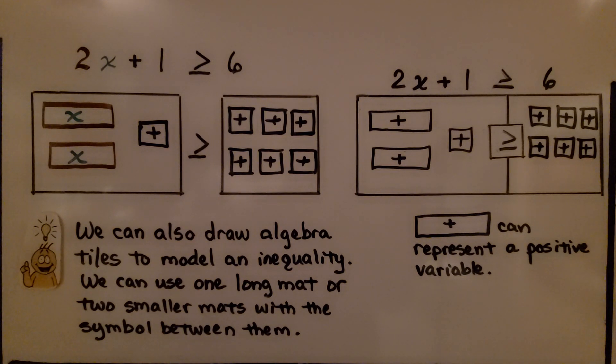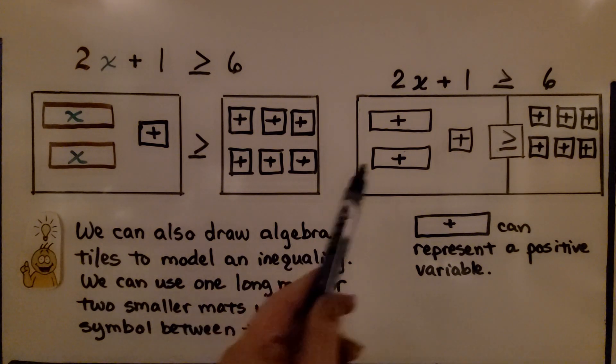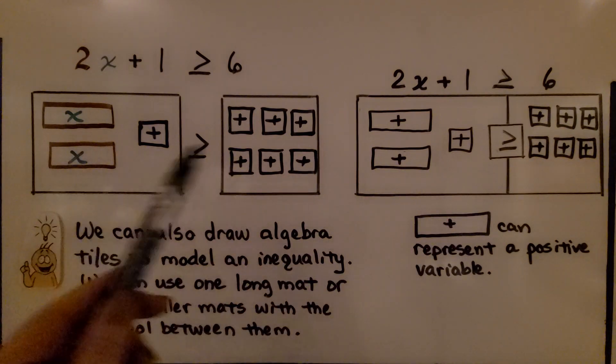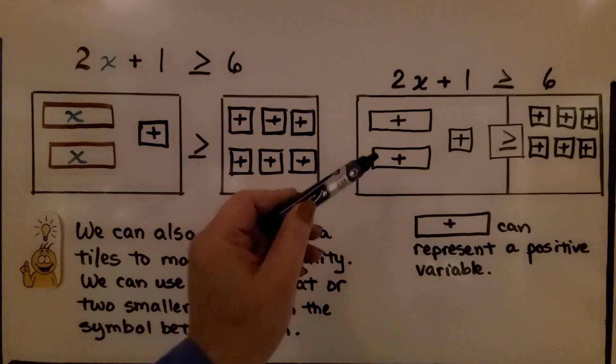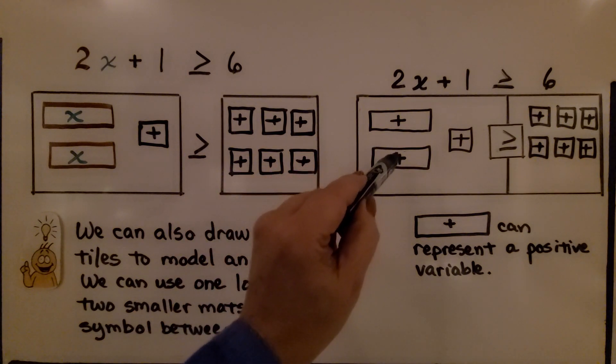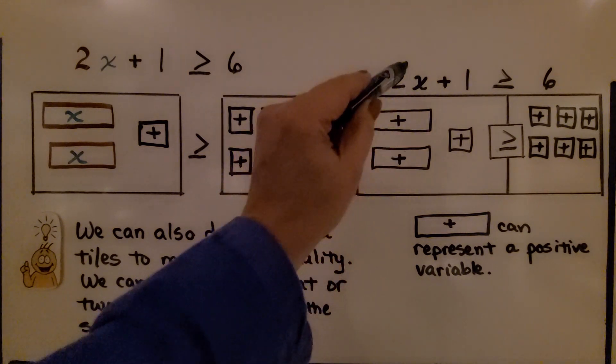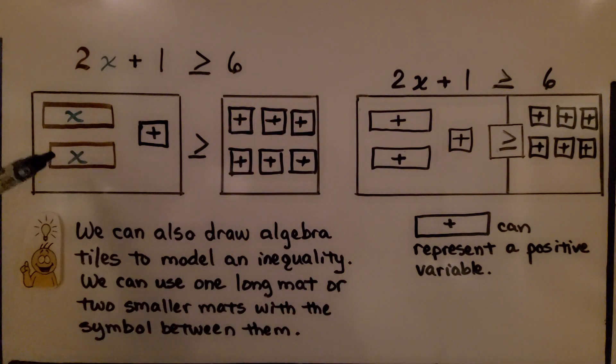Now, we don't need fancy algebra tiles to do this. We can also draw the algebra tiles to model an inequality. We can use one long mat or two smaller mats with the symbol between them. In the textbook, it's showing a rectangle with a plus sign for the variable tiles. I'm showing it as x as a variable. Either way, it's the rectangular one, and you can draw your own.